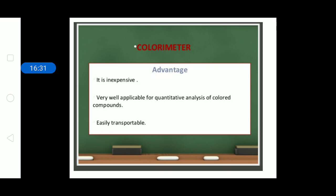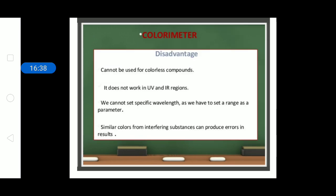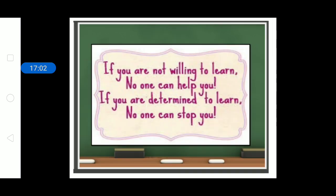Additional applications include determining plant nutrients in soil, hemoglobin in blood, and identifying standard and counterfeit drugs. The advantages of a colorimeter are that it is inexpensive, well-applicable for quantitative analysis of colored compounds, and small in size for easy transport. Disadvantages are that it cannot be used for colorless compounds and does not work in the UV and IR regions — only in the visible color range.